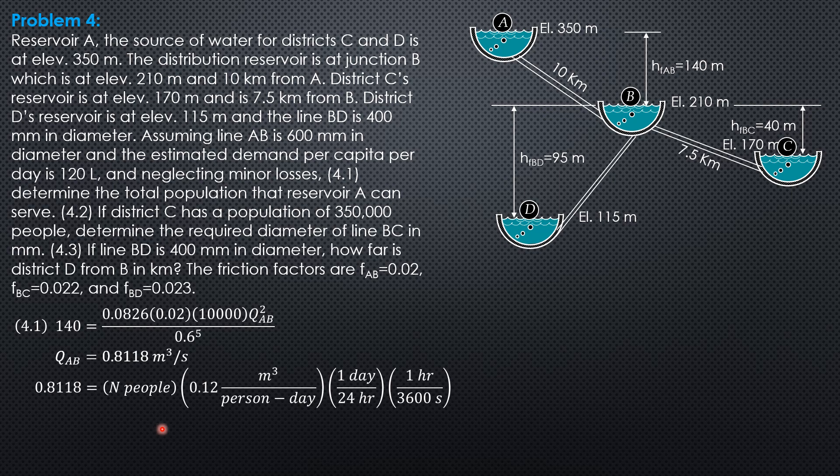So, we can now compute the number of individuals that the pipe AB can serve, total number of individuals. So, 584,496 people.